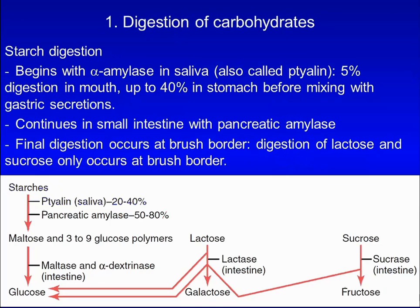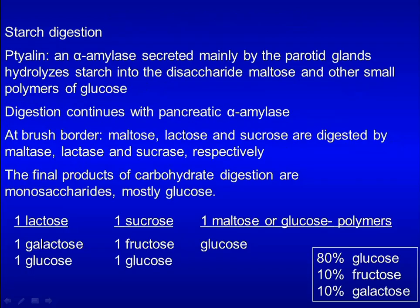Here we will first look at digestion of carbohydrates. Twenty to forty percent of starch is broken down to maltose and small polymers by salivary alpha-amylase, and the rest is digested by pancreatic amylase. Maltose, lactose, and sucrose are digested by maltase, lactase, and sucrase respectively. These are enzymes on the membranes of enterocytes. The final products of carbohydrate digestion are monosaccharides, mostly glucose.